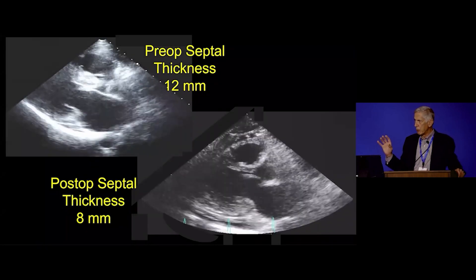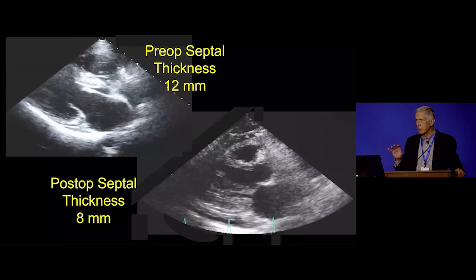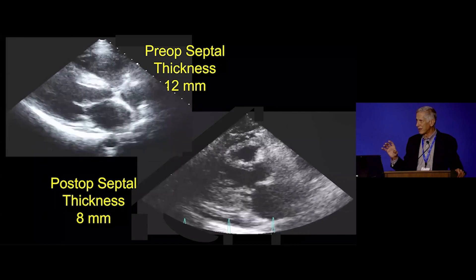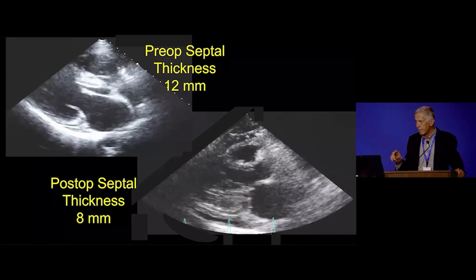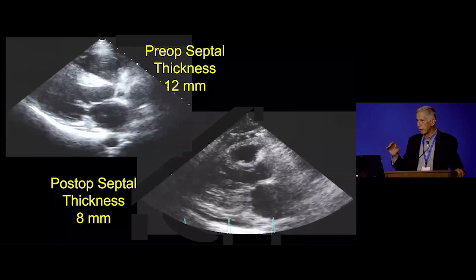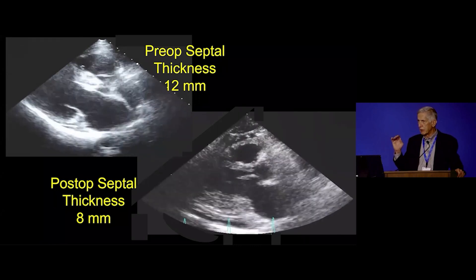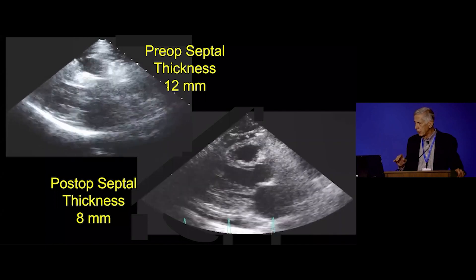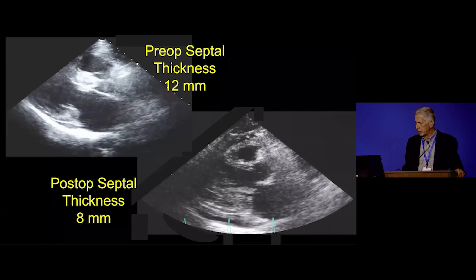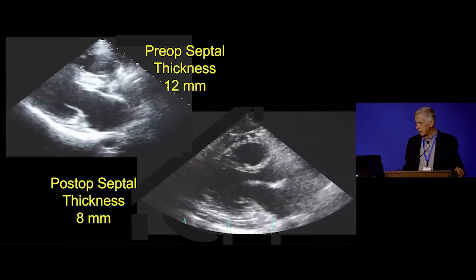Septal thickness is important. In the past, some surgeons advised mitral valve replacement if the septal thickness was less than 18 millimeters. But if you understand where the obstruction is, it's not related to the thickness of the septum — it's related to the extent of the obstruction. You can do myectomies even in septa that are much thinner. This patient was 12 millimeters with SAM and 8 millimeters without.